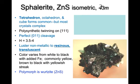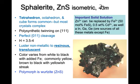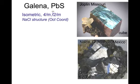A polymorph of sphalerite is called wurtzite. Important solid solutions include iron, which can be up to 50 mole percent of the sphalerite; sphalerite can also hold up to half a weight percent cadmium, as well as indium, gallium, and germanium. All of these are ore minerals as byproducts of sphalerite mining, which is the chief zinc ore in the world.